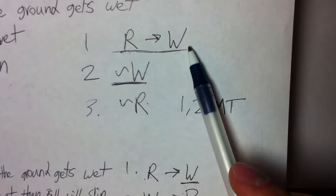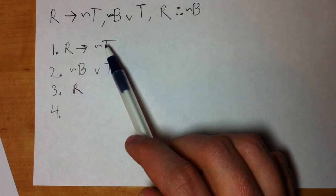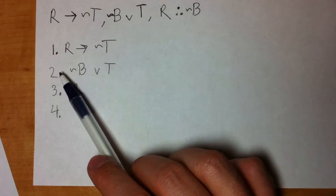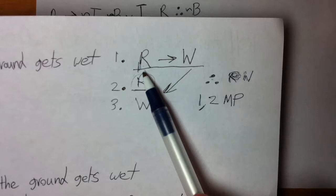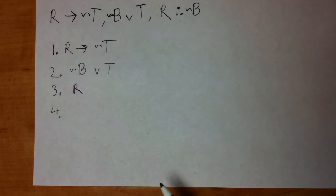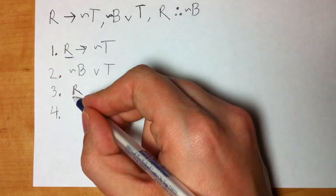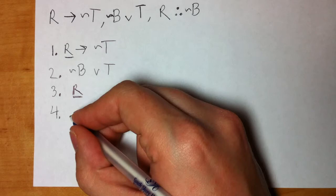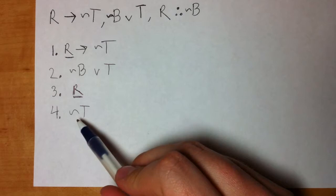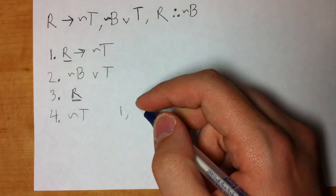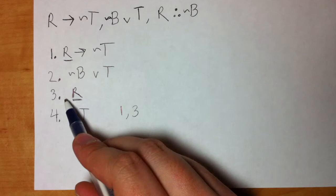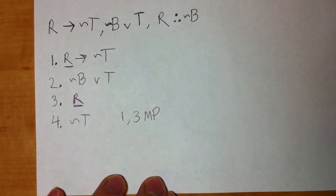So, modus tollens says I need the denial of the consequent. I need the tilde consequent. So, in this case, I would need tilde tilde T. Let's not worry about that yet. Well, I don't have that, so I can't do modus tollens. What about modus ponens, MP? Modus ponens says that if I have the left side, I can get the right side. Do you see that match? The left side of the arrow is R, and there's R sitting there. So, what could I write on line 4? If you said tilde T, you're right. And the way we show that we didn't just make that up is by saying, okay, I used line 1, and I used line 3. Line 1 is the conditional. Line 3 is the antecedent. And the rule that I used was modus ponens.